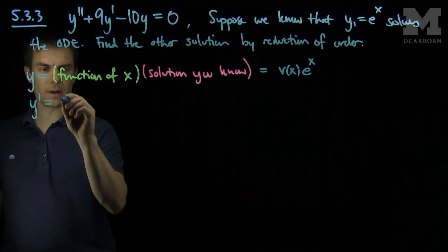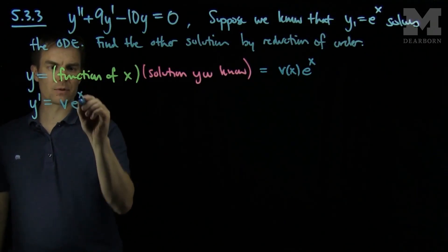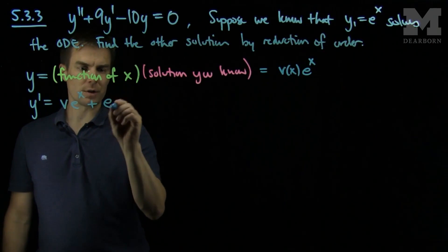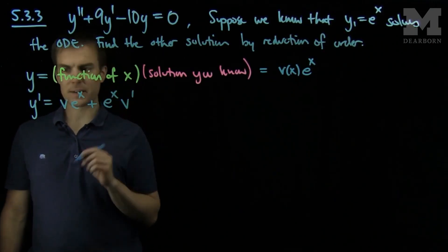y prime will be the first function, v, times the derivative of the second function. That's easy enough to do. Plus the second function, e to the x, times the derivative of the first function.